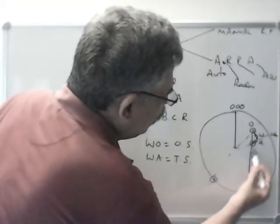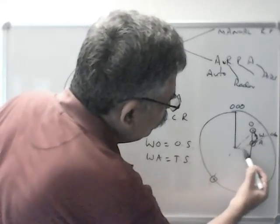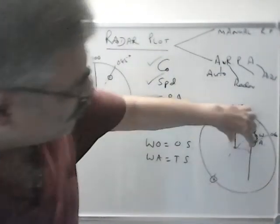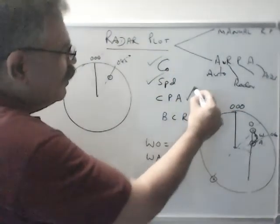Now from here, if you draw perpendicular to OA and measure this distance, that will be the CPA. Similarly, bow crossing range.